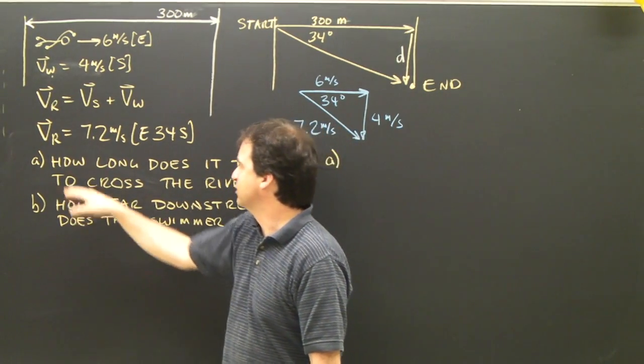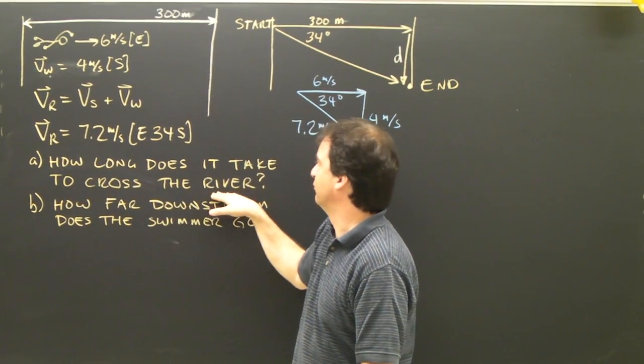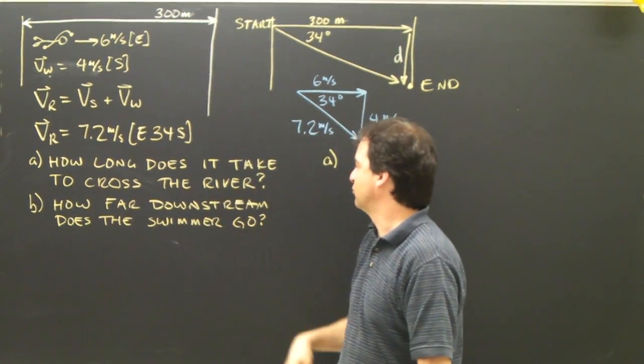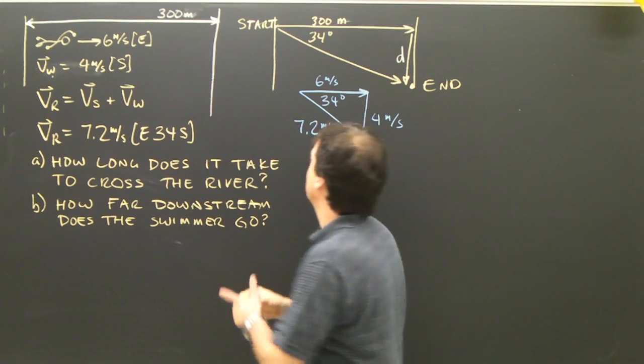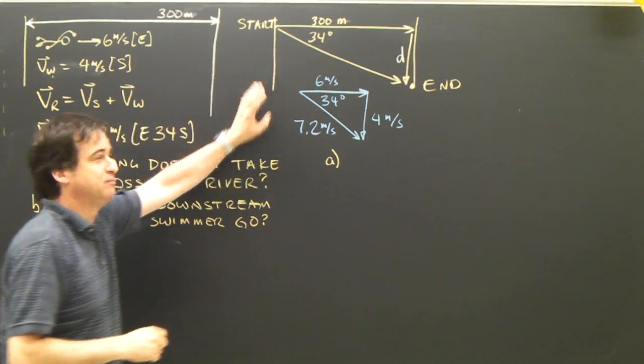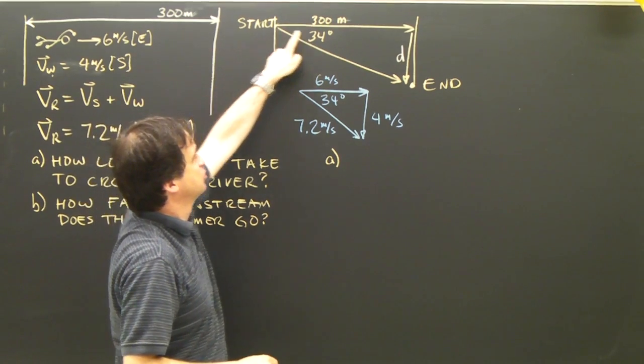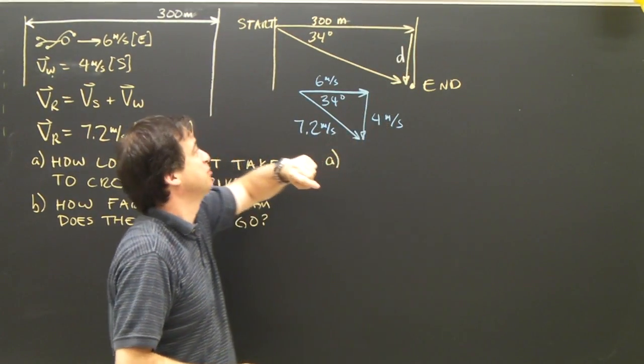Now what I want to know is how long does it take to cross the river? You'll notice I'll give you a distance now up here. And how far downstream does the swimmer go? Well, if you look, this diagram here is similar to this diagram. Here's where the swimmer starts. The swimmer is going to swim across the river, which is 300 meters wide.